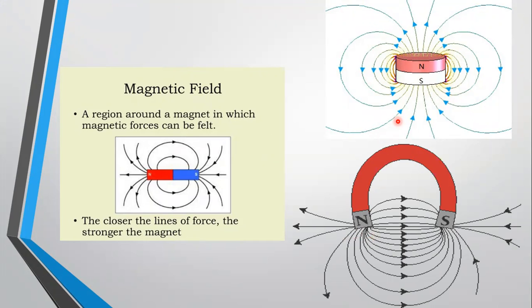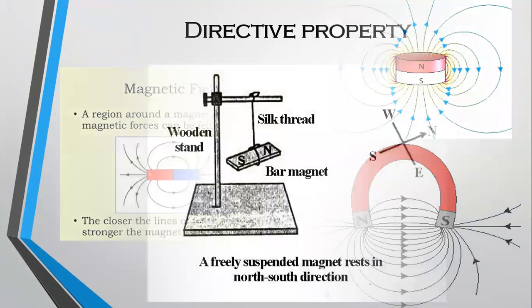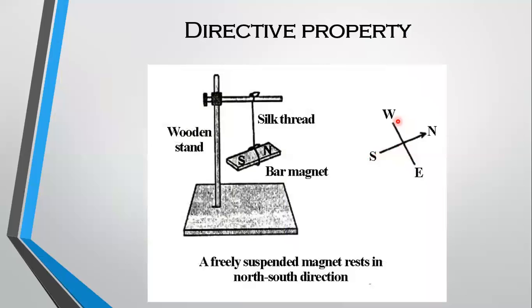Do you know that magnets are used to find directions? Yes, it is said to be the directive property of magnets. A freely suspended magnet always comes to rest in the north-south direction with the north pole of the magnet always pointing in the geographical north direction. This property of the magnet is very useful. For centuries travelers have been making use of this property of magnets to find directions.